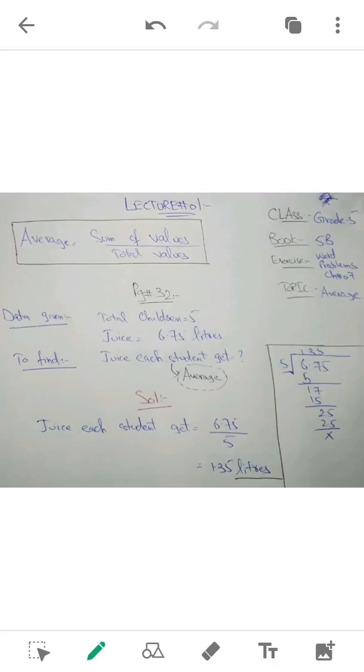For example, in this case, it is given that there are five children, so it means the total number of children is five. So this formula of average, where three values are there—average, total values, and sum of values—this five will be substituted in place of total number of values.